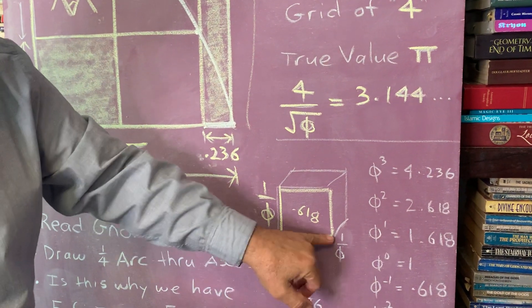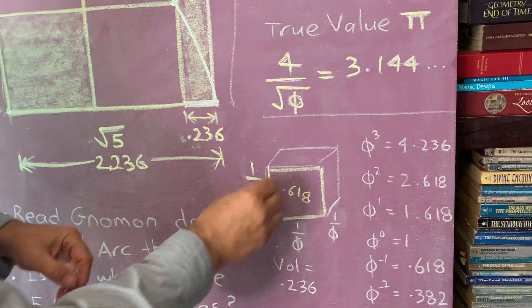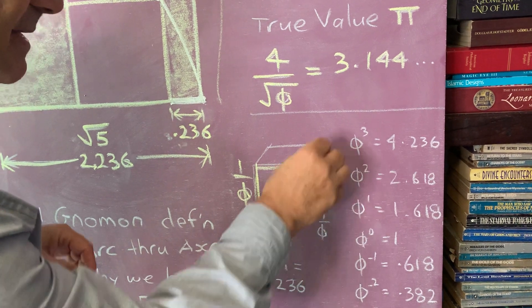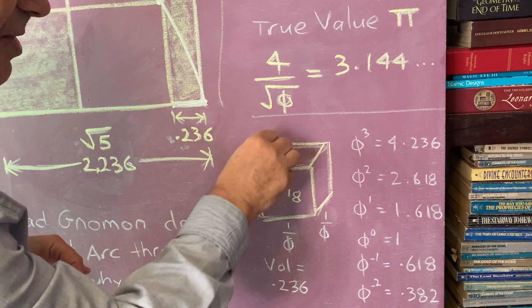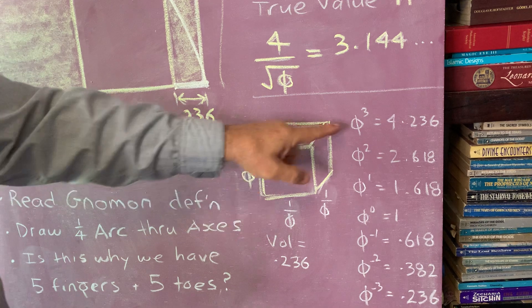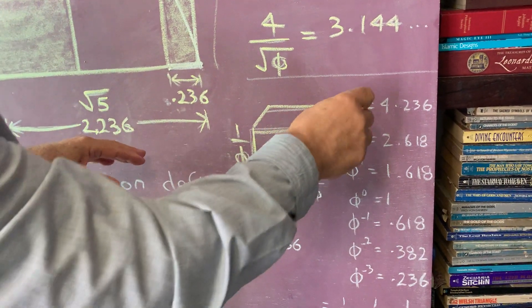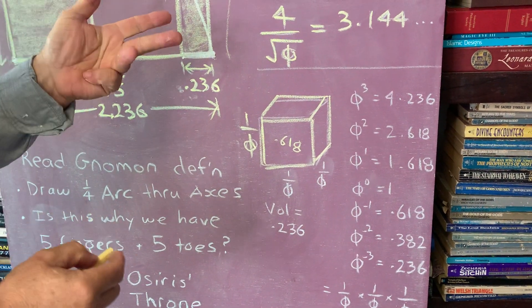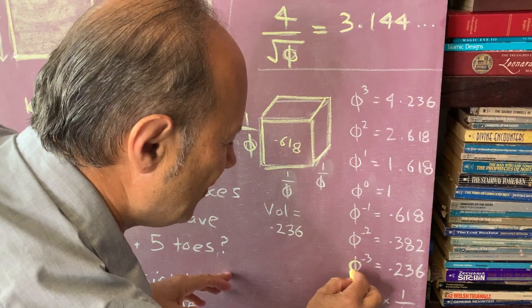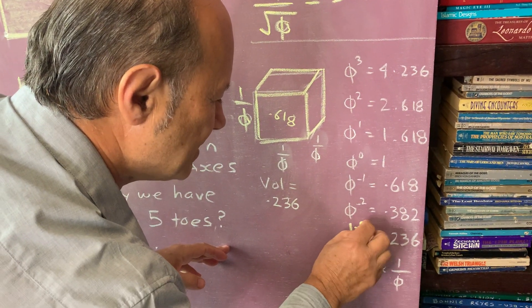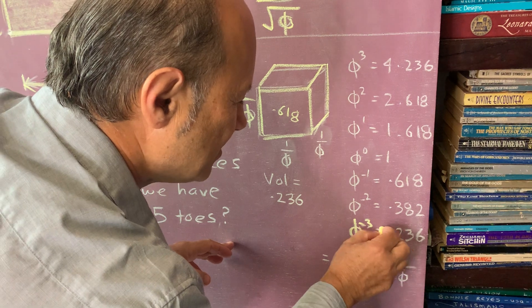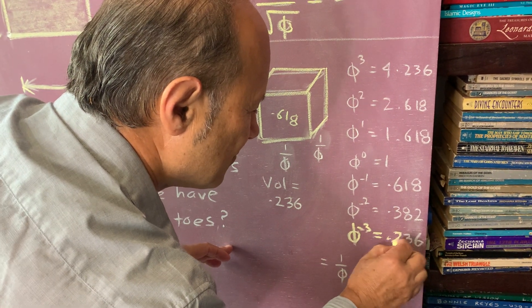If we made a cube and we cubed it, we know that 0.618 times 0.618 times 0.618 is called phi to the minus 3. So this distance here, phi to the minus 3 equals 0.236.